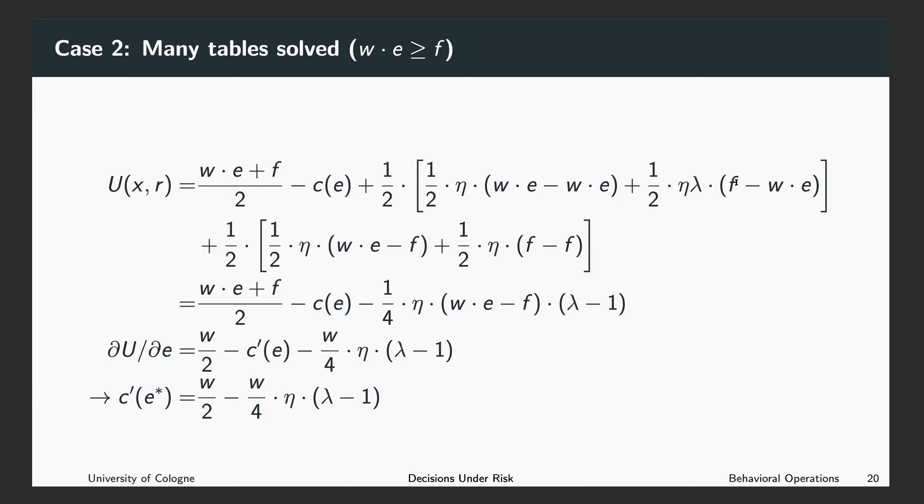Here, we are in the case where the fixed payment is smaller than the piece rate, which means that this expression here is negative, which means you suffer from getting the fixed payment instead of your reference point, which is given by the piece rate. Again, as this is negative, it has to be multiplied with eta times lambda, where lambda expresses how much more you suffer from losses than you benefit from gains.